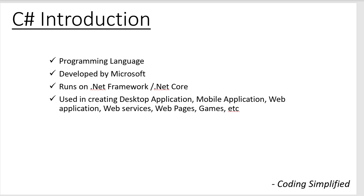C# is a programming language, just like C, Java, Ruby, and Python. It was developed by Microsoft. C# runs on the .NET Framework or .NET Core. The .NET Framework was the original framework developed by Microsoft. Later they also built .NET Core, and now C# basically runs on both .NET Framework and .NET Core.